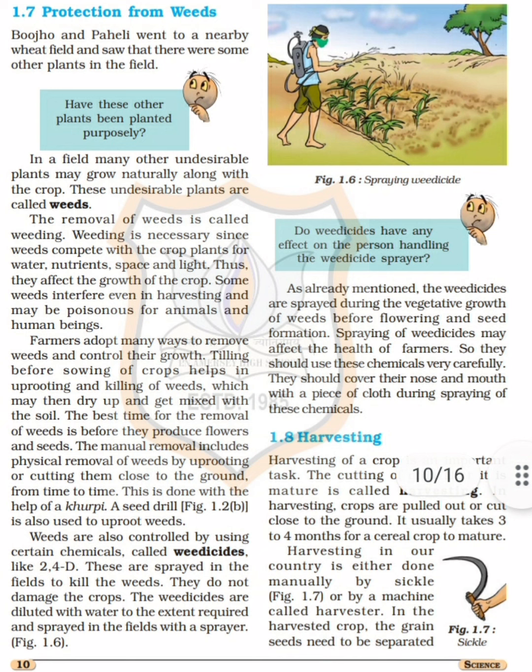Farmers adopt many ways to remove weeds and control their growth. Tilling before sowing the crops helps in uprooting and killing the weeds.